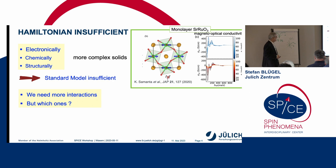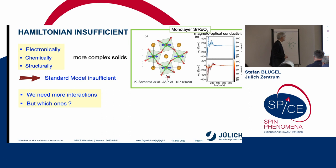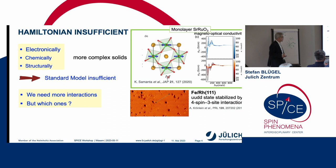And the problem is, in the last years, we realized that we go to more and more electronically, chemically, and structurally more complex solids. And here's an example which was presented by Yura yesterday. And what we realized is the standard model becomes increasingly insufficient. We need more and more interactions. But which ones? And so typically, the situation is that experimentalists come, they have their wonderful experiments, and say, this is a very complex magnetic state.